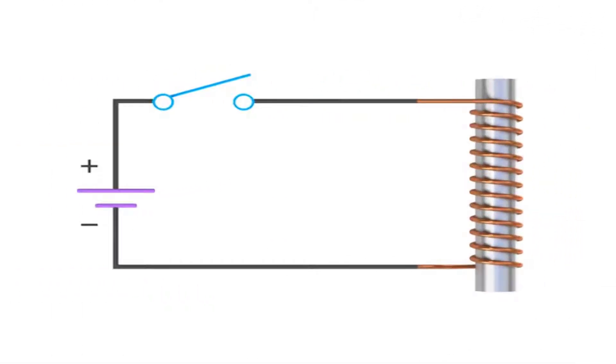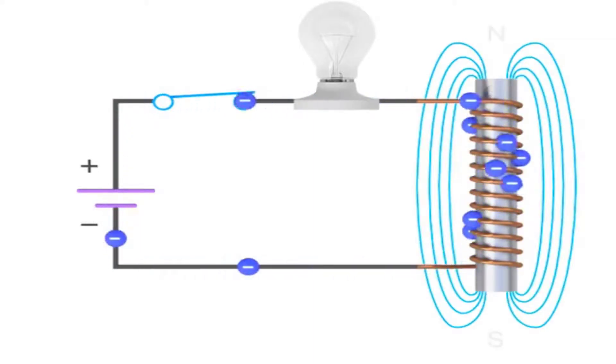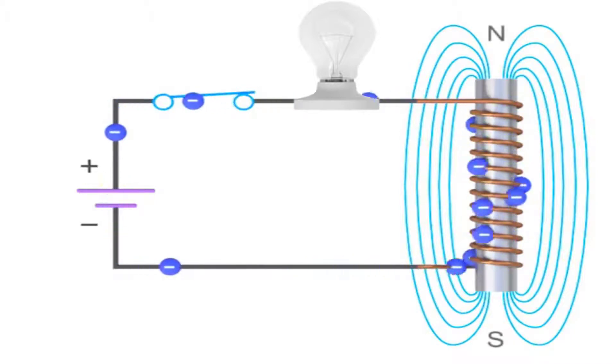To demonstrate the properties of an inductor, we'll add a resistance, or light bulb, to this circuit. As the switch is closed and the current flows through the circuit, the electromagnetic field in the inductor forms and expands rapidly.